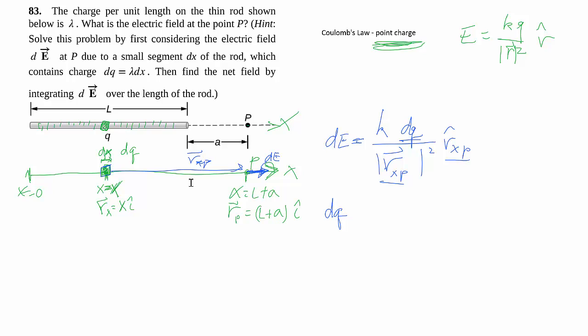First of all, let's deal with dq. It even tells us that dq is lambda dx. Well, how does that work? What we're saying is the charge is uniformly distributed through the whole thing. So basically, if we take a fraction of the length, we're taking the same fraction of the charge.